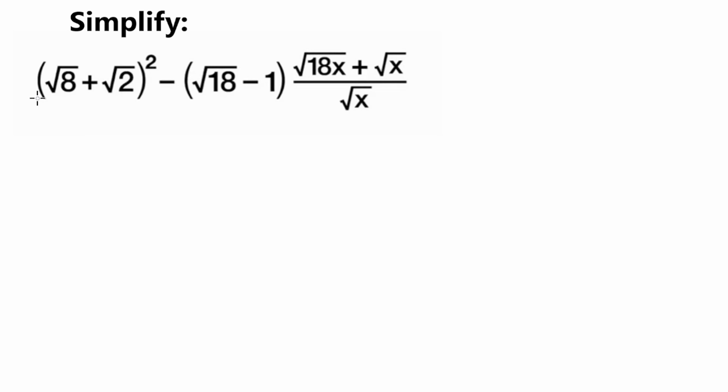Hello everybody. Today I brought you another problem and today we are tasked with simplifying the given equation. We have parentheses square root of 8 plus square root of 2 squared, minus parentheses square root of 18 minus 1 times square root of 18x plus square root of x, all over square root of x. We want to simplify this as much as possible.